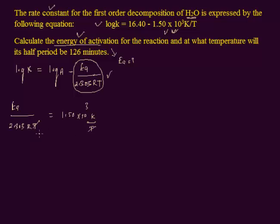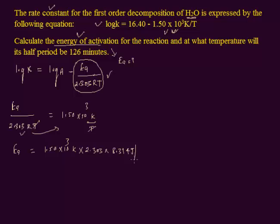Temperature cancels out on both sides. We then transfer this value to the right side, giving us Ea equal to 1.50 × 10³ K, multiplied by 2.303, multiplied by R, which equals 8.314 J per mol·K. Kelvin units cancel out.